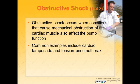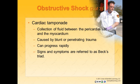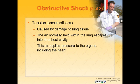Obstructive shock occurs when conditions that cause mechanical obstruction of the cardiac muscle also affect pump function. Common examples include cardiac tamponade and tension pneumothorax. Cardiac tamponade is a collection of fluid between the pericardial sac and the myocardium, caused by blunt or penetrating trauma, and it progresses rapidly. Blood leaks into the tough fibrous membrane known as the pericardium, causing an accumulation of blood within the pericardial sac and compression of the heart. Signs and symptoms are referred to as Beck's triad: jugular vein distension, muffled heart sounds, and systolic and diastolic blood pressure starting to merge. Tension pneumothorax is caused by damage to lung tissue that allows air to escape into the chest cavity, applying pressure to organs including the heart.